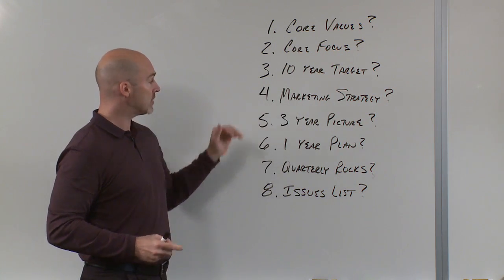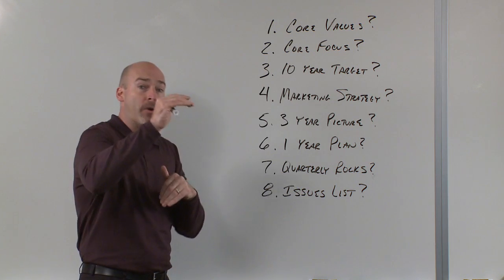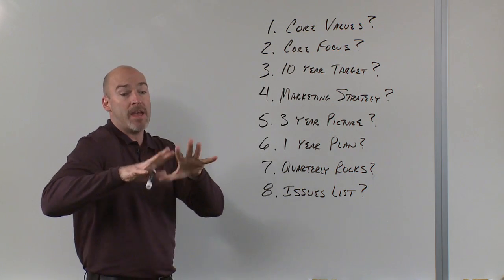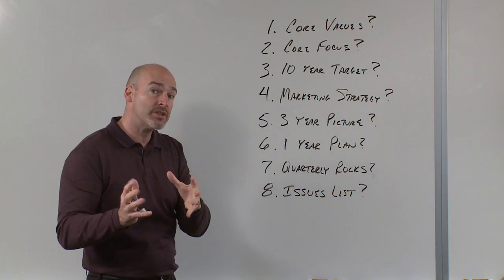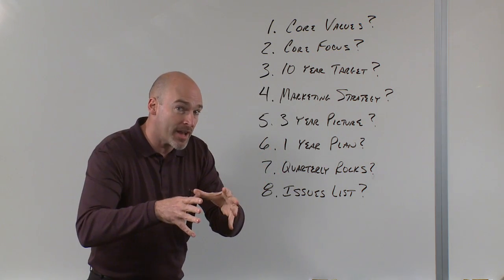Question number five is what is your three-year picture? This is painting a picture and agreeing what is the revenue, profit, and measurable goals and then five to 15 bullet points just painting a picture of what your organization will look like in three short years, but again, agreeing on that three-year picture.